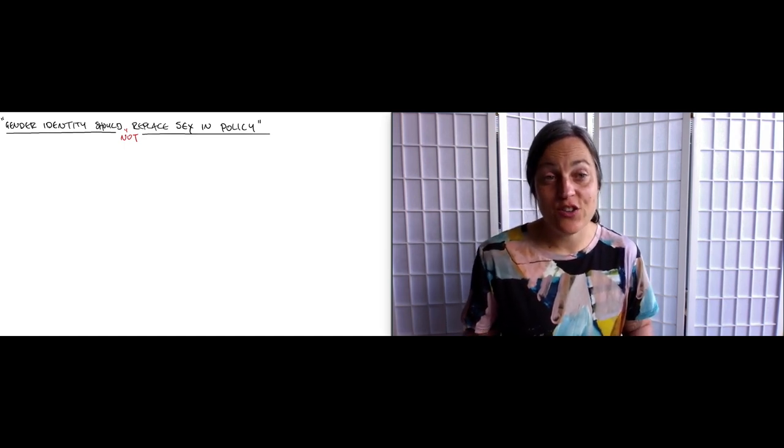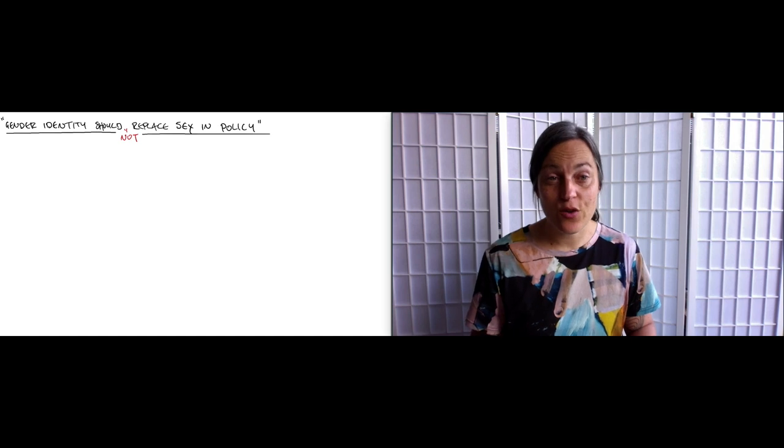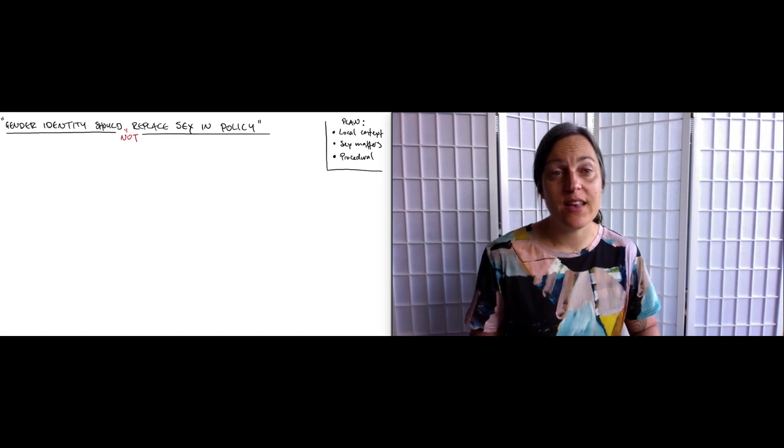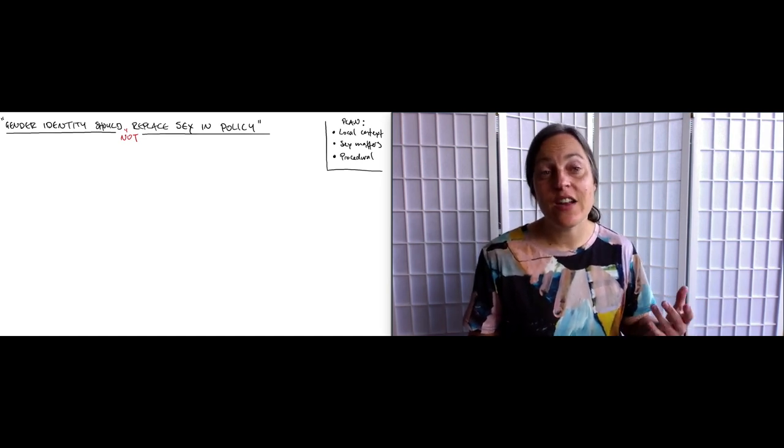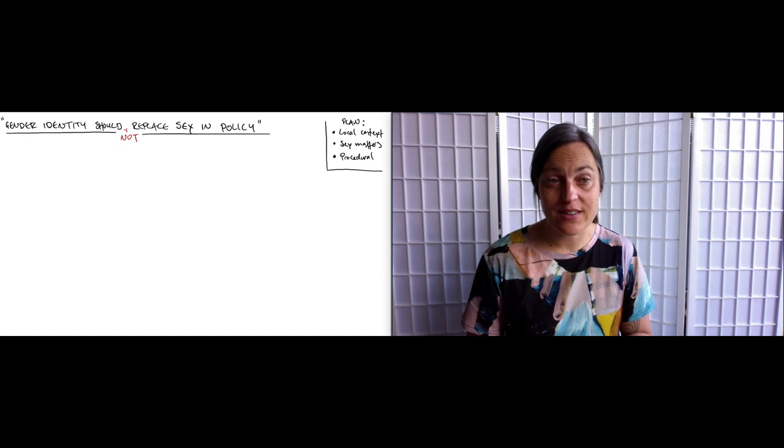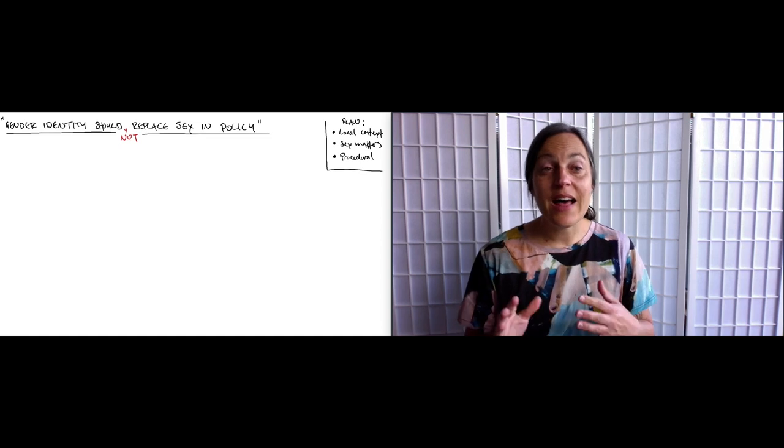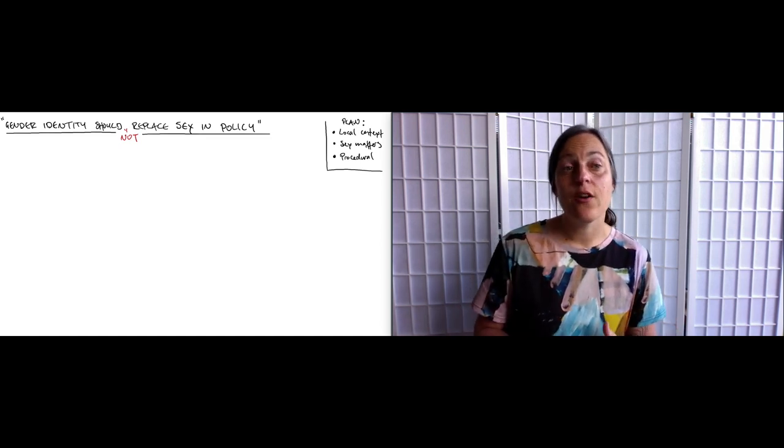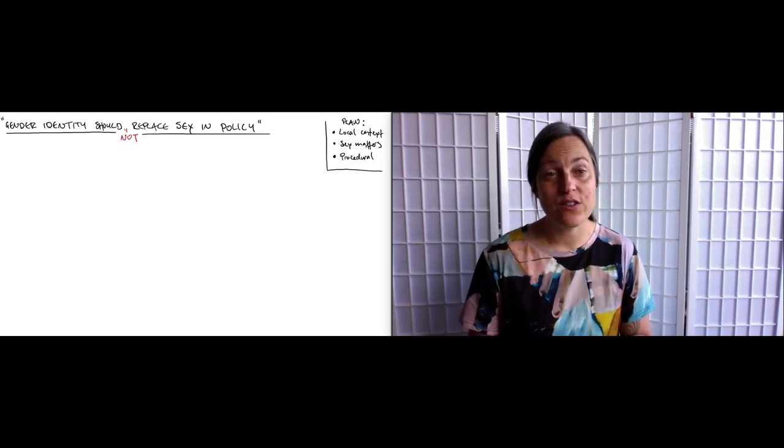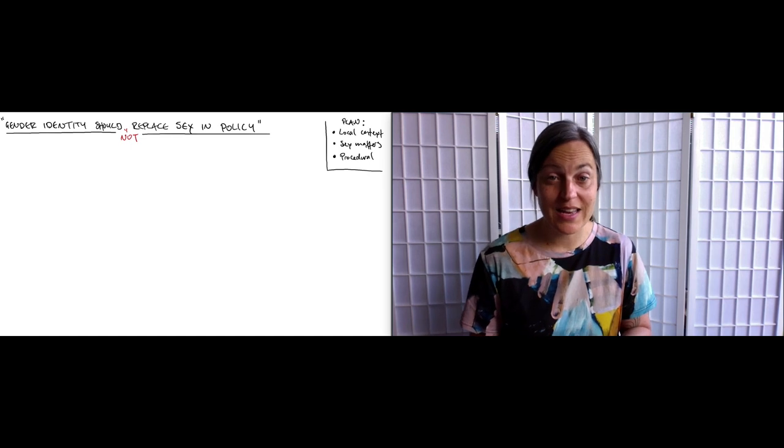I'm arguing that gender identity should not replace sex in policy. I'll start with some local context, which is that in Victoria gender identity has in fact replaced sex in the law and in quite a bit of policy. I'll argue that doing so would compromise important interests by working through concrete real examples. Then in the last part I'll turn to a procedural question: how should the replacement of sex with gender identity be allowed to come about if it's going to? Because things didn't happen this way in Victoria, I'll suggest that the situation we're currently in is unjust.